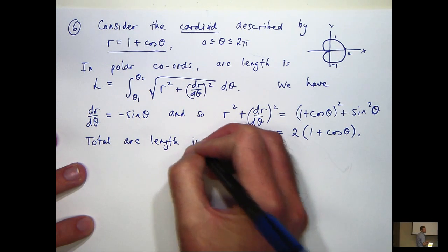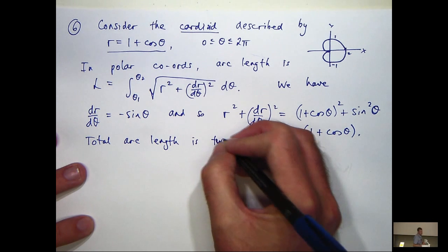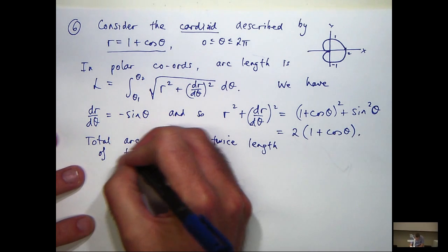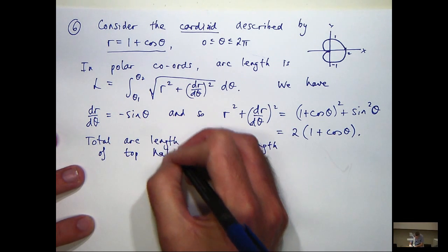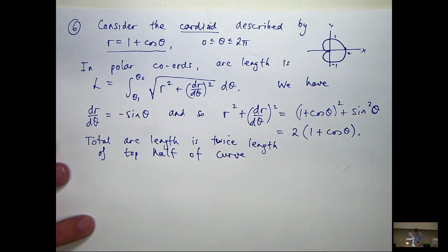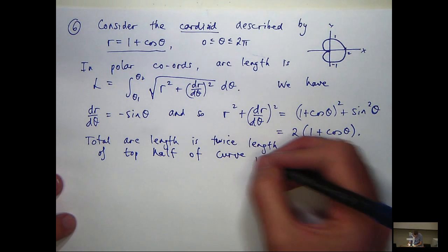So let's just make a note of that. Total arc length is twice the length of the top half of the curve.